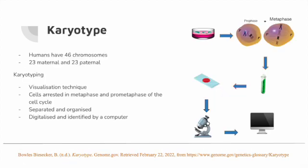As we know, we have 46 chromosomes in the nucleus of our cells — 23 maternal coming from our mothers and 23 paternal coming from our fathers. Investigating these chromosomes can give you a lot of information about a child even before it's born, from its sex to a range of abnormalities. To visualize these chromosomes we need to prepare what is known as a karyotype.